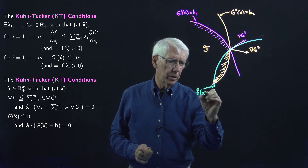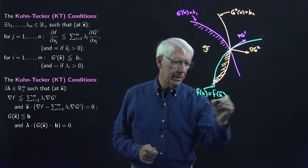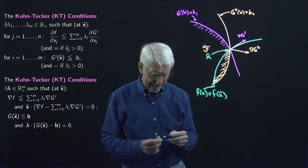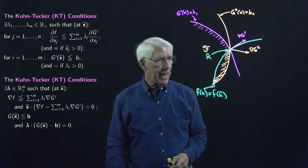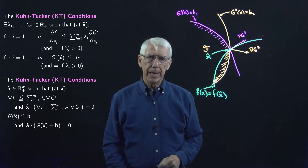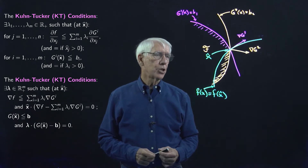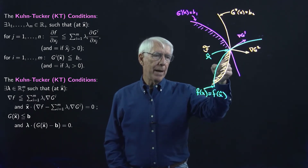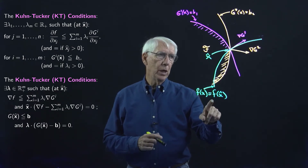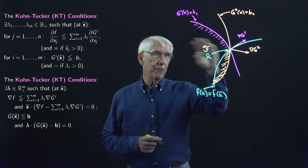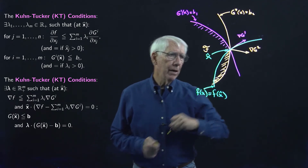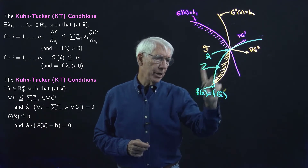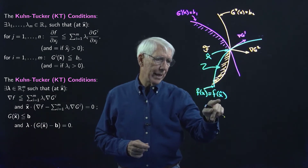I have drawn in the level curve of our objective function that passes through the point X hat. Let's see if this is a solution to our maximization problem and if the Kuhn-Tucker conditions are satisfied. This does not appear to be a maximizer of our objective function subject to our constraints — it's not the best value of F in the feasible set, because all of the vectors in this lens-shaped region are on a higher objective contour than the level curve through X hat.